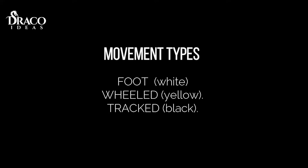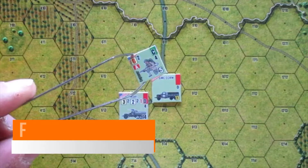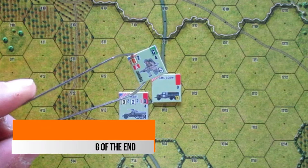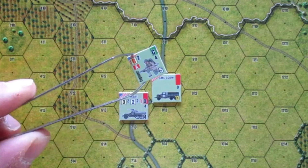The types of movement are foot, printed in white; wheeled, printed in yellow; or tracked, printed in black. In the foot group are included platoons that use animals to move, like the cavalry.